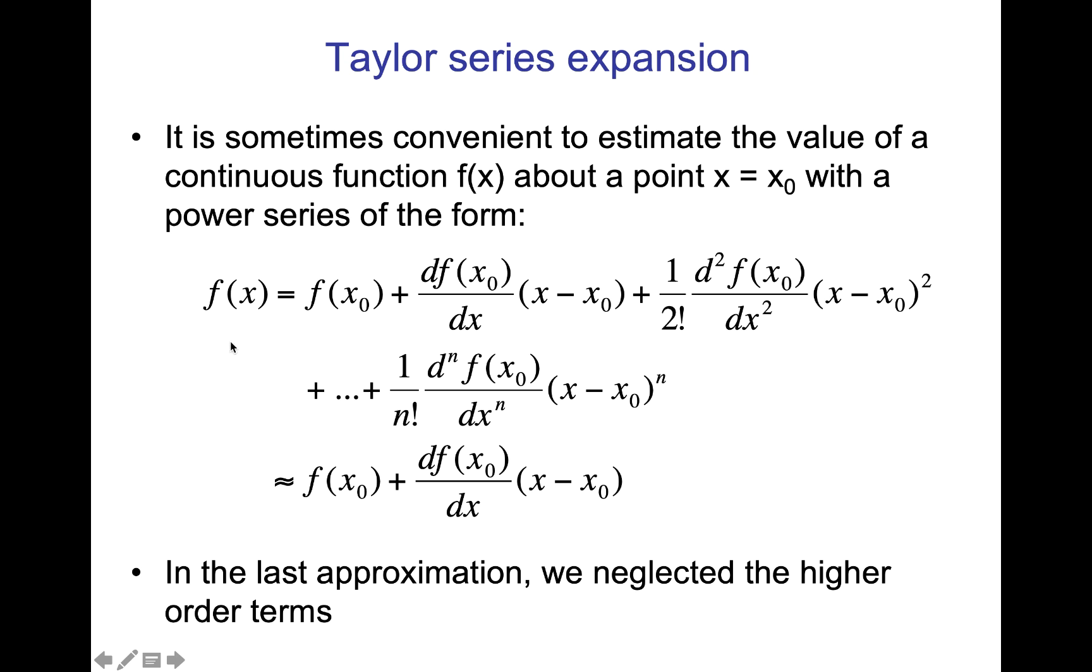What we usually do is neglect higher order terms. So we're going to neglect x minus x-naught squared and x minus x-naught to the n, under the assumption that x minus x-naught, which will be delta x, is small. If delta x is small, a fraction, say 0.1, 1 tenth.